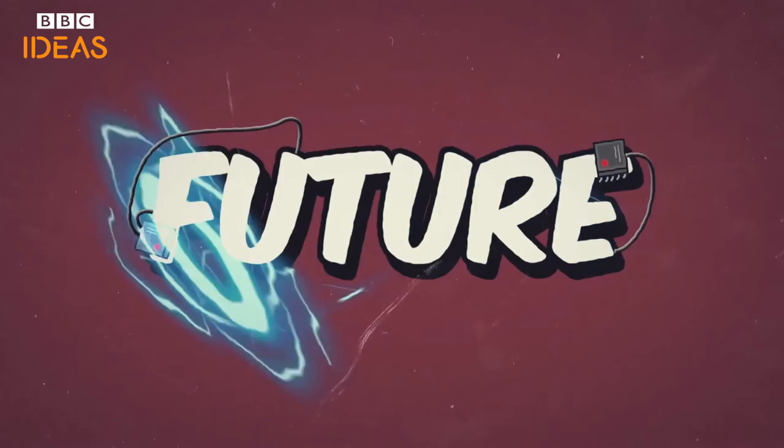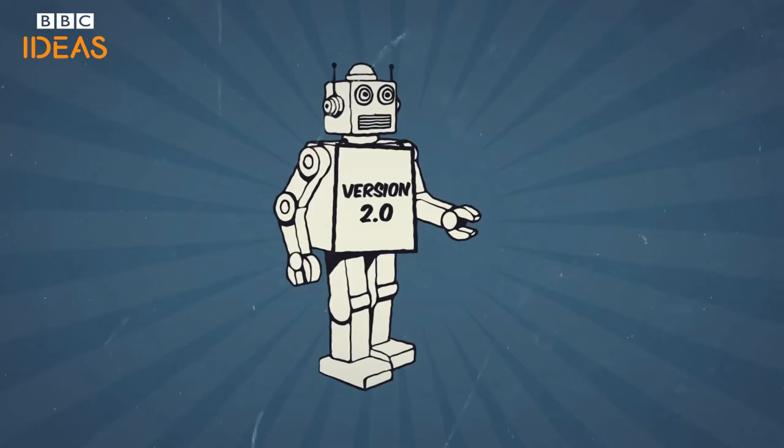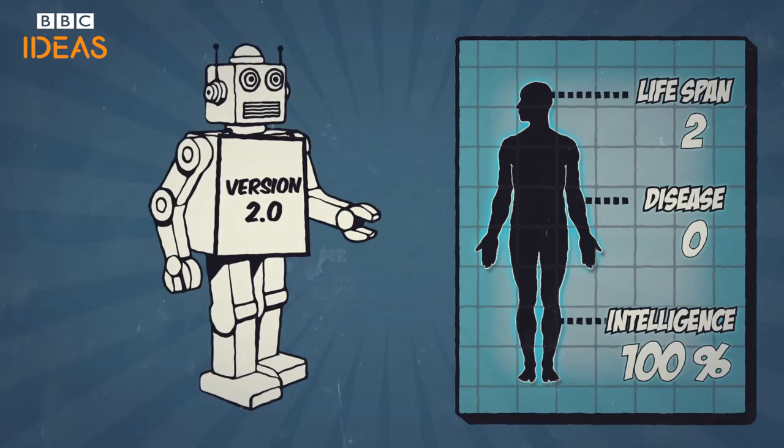The thought of being replaced by a new form of humanity is bound to be unsettling. But transhumanists think we would be wrong to lament the end of humanity as we know it, when what replaces us would be so much better. It would be like wishing children never grew up or that Homo erectus never evolved into Homo sapiens. If the transhumanists are right, we could be one of the last generations of humans to roam the planet.